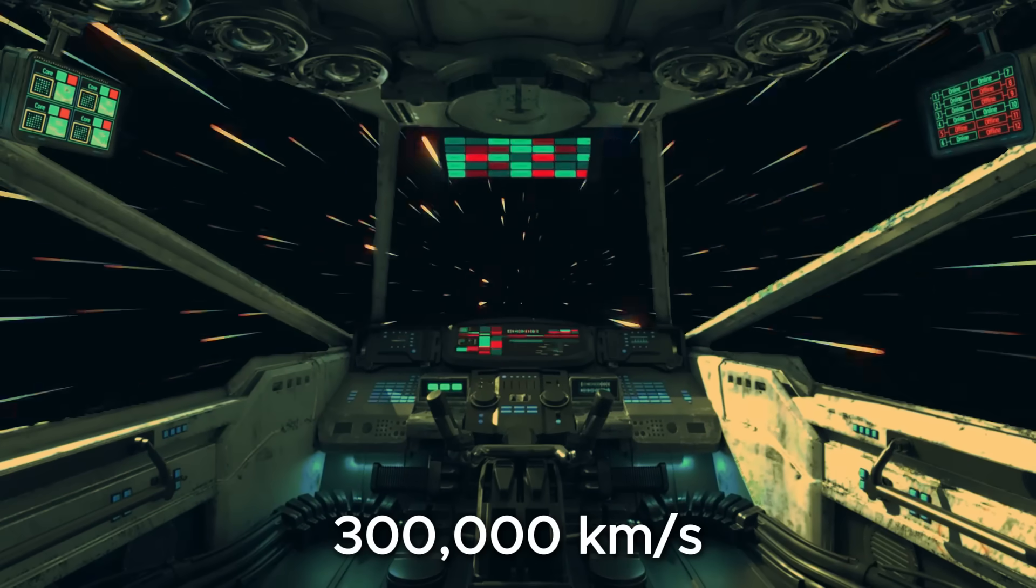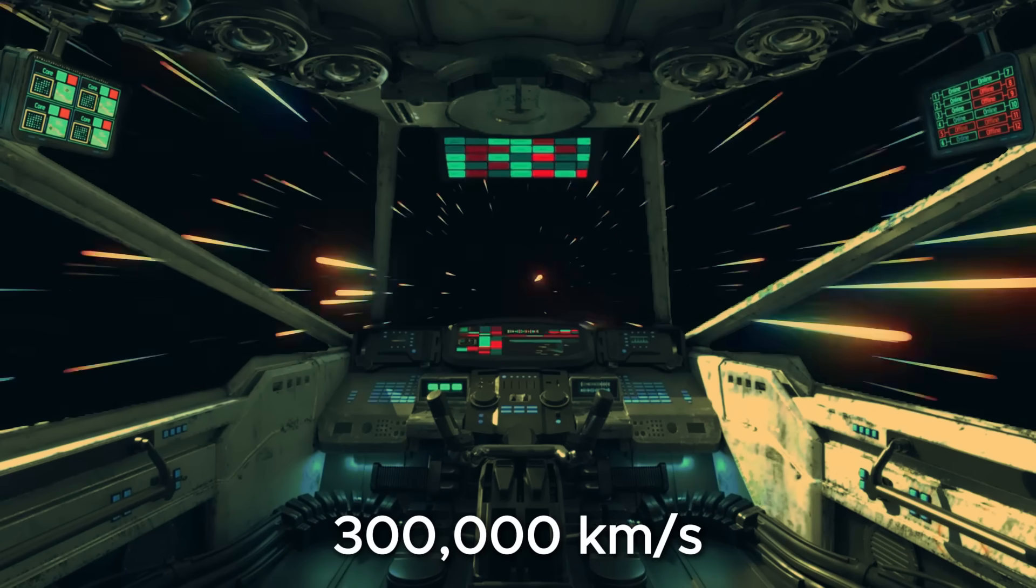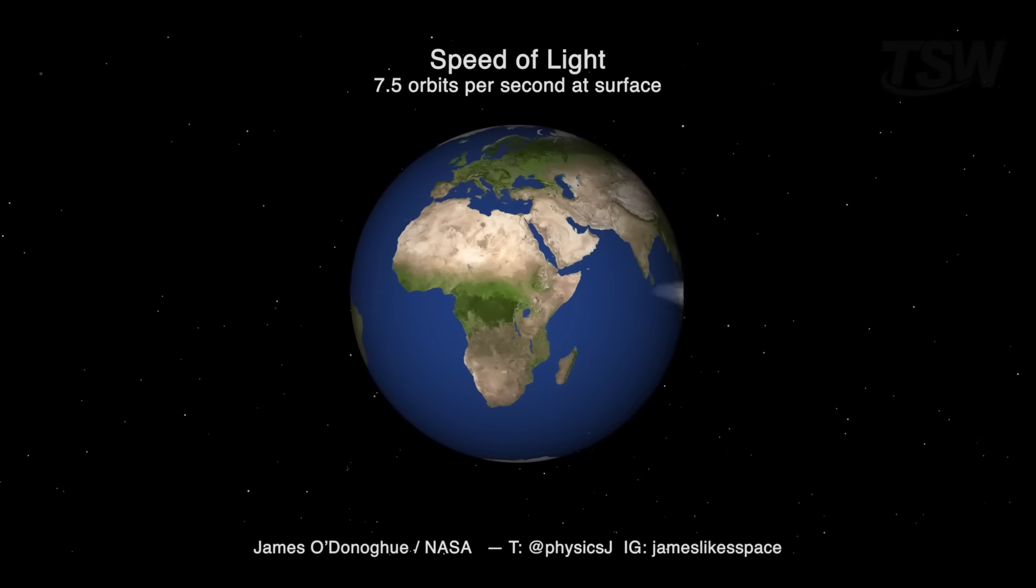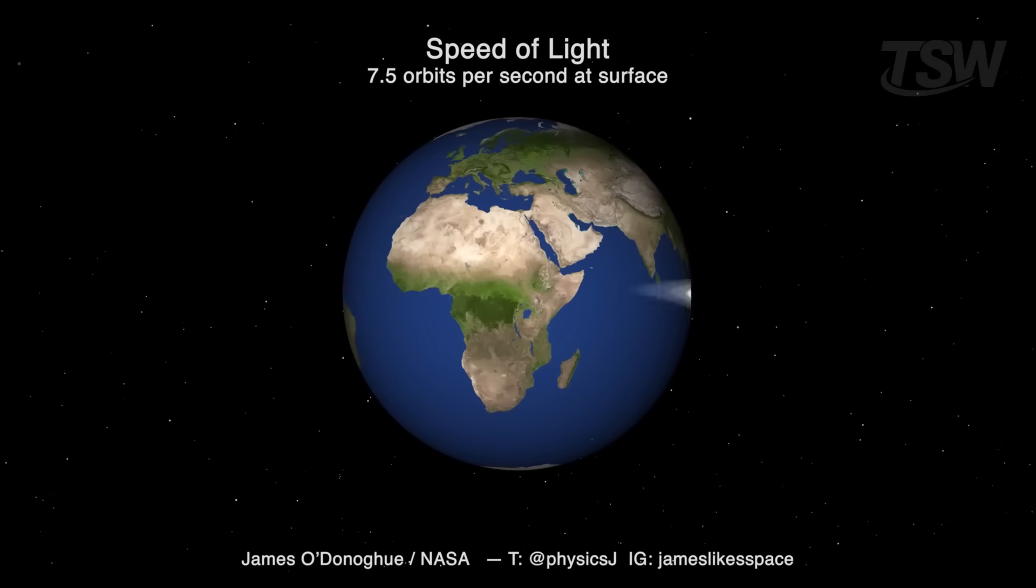Imagine being able to move at 300,000 kilometers per second. Yes, per second. At that speed, you could circle the Earth seven times in less than a second. Sounds absurd, and it is. In modern physics, this is the ultimate speed limit, the speed of light.